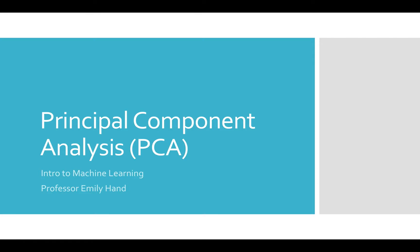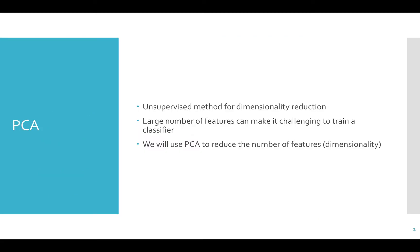Welcome back to Machine Learning. This video will cover Principal Component Analysis, or PCA. PCA is an unsupervised method of dimensionality reduction. Having a large number of features can make it challenging to train a classifier. We will use PCA to reduce the number of features, which is the same thing as the dimension of the data.